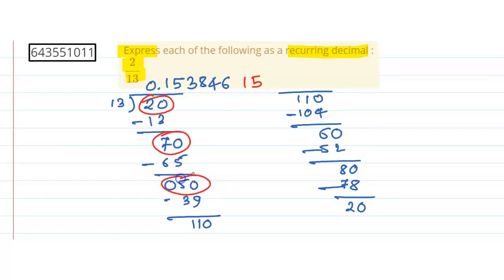13 fives are 65. Again 5 is remaining. In the next term we will get 50. 13 threes are 39. And this process is continuing.